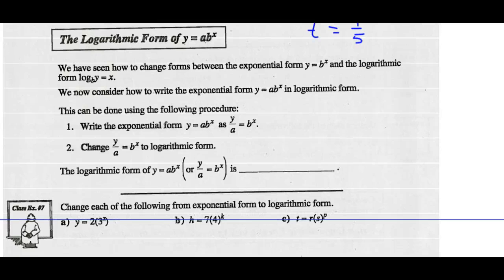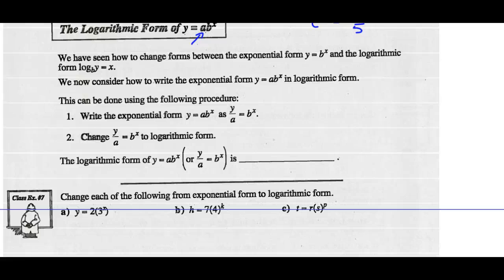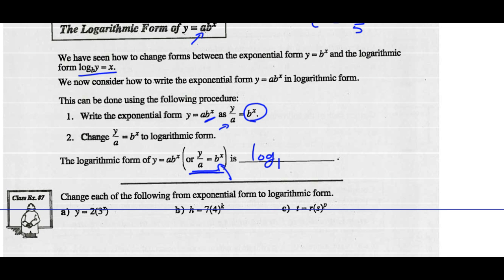Logarithmic form of y equals a times b to the x. We've changed from exponential form y equals b to the x to logarithmic form: log of y base b equals x. Now consider how to write y equals a times b to the x in logarithmic form. Step 1: isolate the power b to the x by dividing both sides by a. Once we have b to the x by itself, we can change it into logarithmic form. The base of the power is b, so the base of the logarithm is also b. Taking the log of y over a, all to the base b, will equal the exponent x.